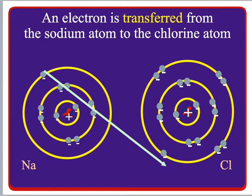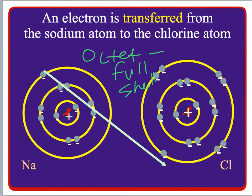Looking at this picture, we can see that we have a sodium atom — sodium has one valence electron — and a chlorine atom with seven valence electrons. The idea is that they want to fulfill the octet rule, meaning they want full outer shells. If the sodium atom loses this electron, it will have a full shell underneath. And if the chlorine atom gains another electron, its outer shell will become full.